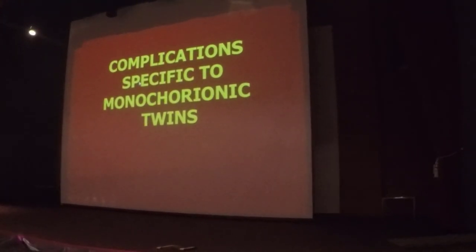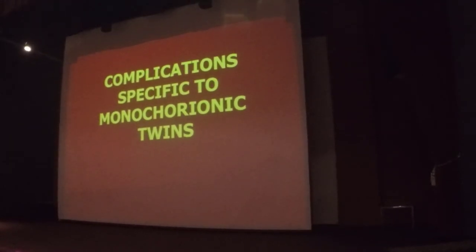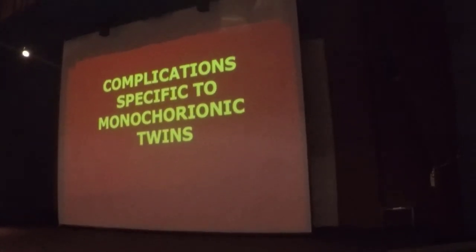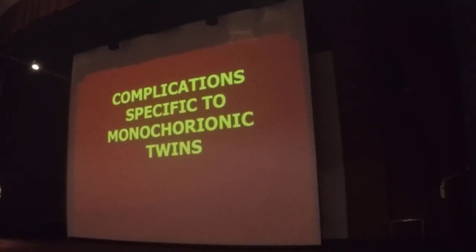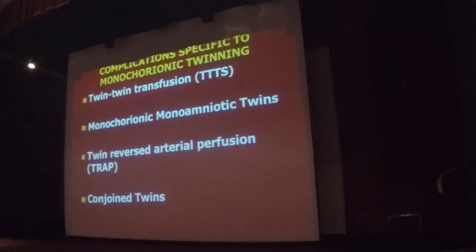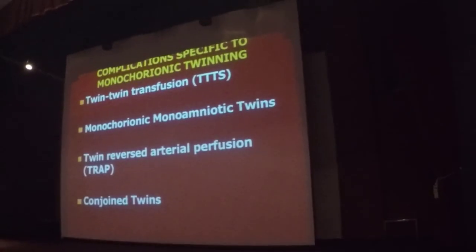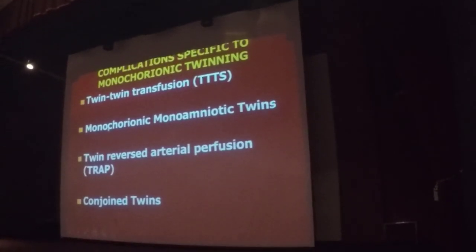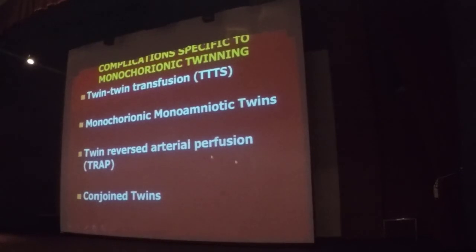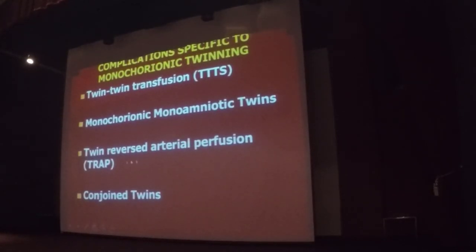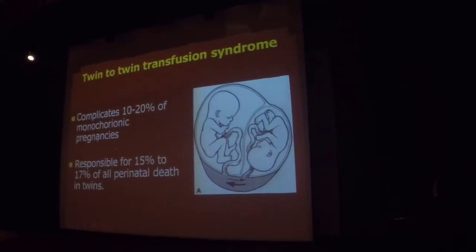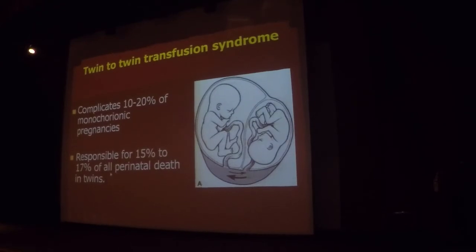The problems are more towards monochorionic twins. When you have a monochorionic twin, they must be followed up very closely in a separate group. In our hospital, under the MFM unit, we see almost all monochorionic twins separately with very close follow-up every 2 weeks to look for any possible complications, whereas a dichorionic twin can be seen every 3–4 weeks. About 10–20% of monochorionic twins are responsible for 15–17% of perinatal deaths.